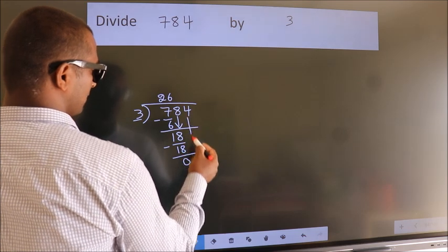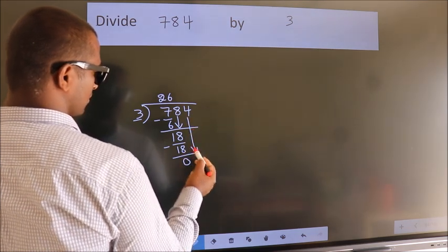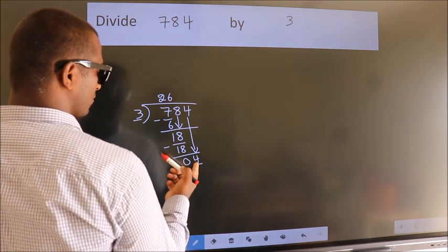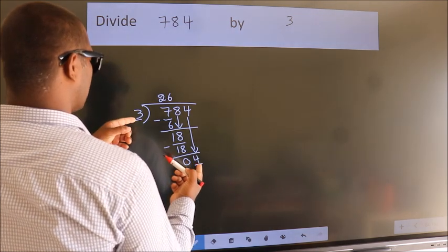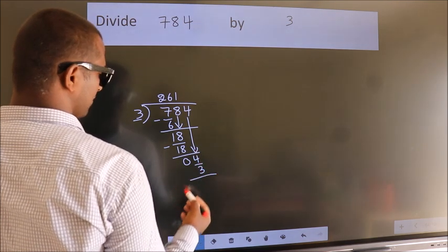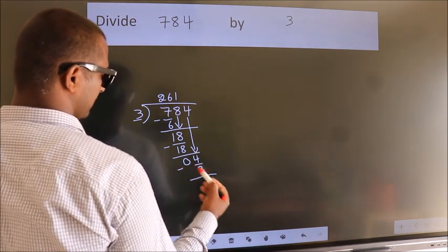After this, bring down the beside number. So, 4 down. So, 4. A number close to 4 in 3 table is 3 1s, 3. Now we subtract. We get 1.